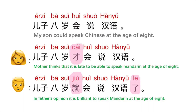Please note: when we use the time adverbs 就 and 才, the sentences are subjective — they only carry the speaker's opinion. So for the same situation, 儿子八岁会说汉语, the mother might say 儿子八岁才会说汉语, thinking it is quite late, while the father might say 儿子八岁就会说汉语了, thinking speaking Mandarin at 8 years old is early.